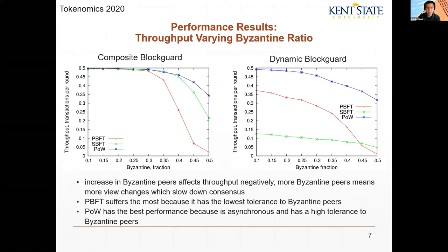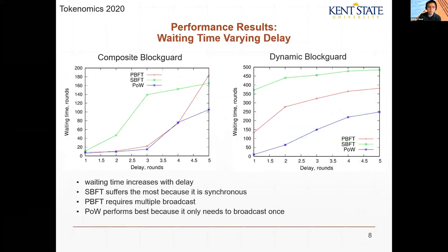Here we have waiting time versus delay. As delay increases, waiting time very intuitively goes up. We see a nice spread in dynamic because of the synchrony of the system. Proof-of-Work is the fastest, PBFT follows behind, and SBFT has the highest waiting time.